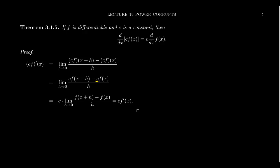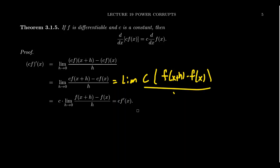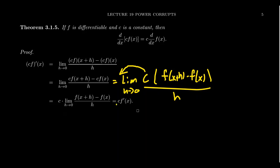This is a constant multiple, which can be factored out of the numerator. We get c times the quantity f of x plus h minus f of x, all over h as h goes to 0. Since this is a constant multiple of the limit, it can be taken out of the limit process. What remains is just the derivative of f at x, which exists and equals f prime of x since f is differentiable.